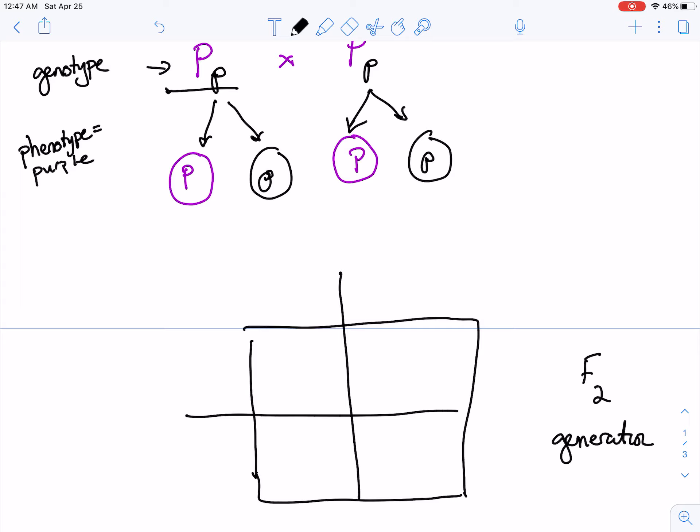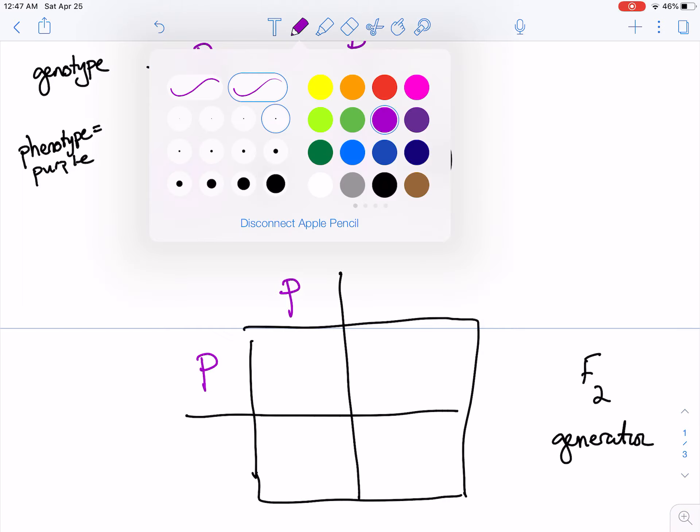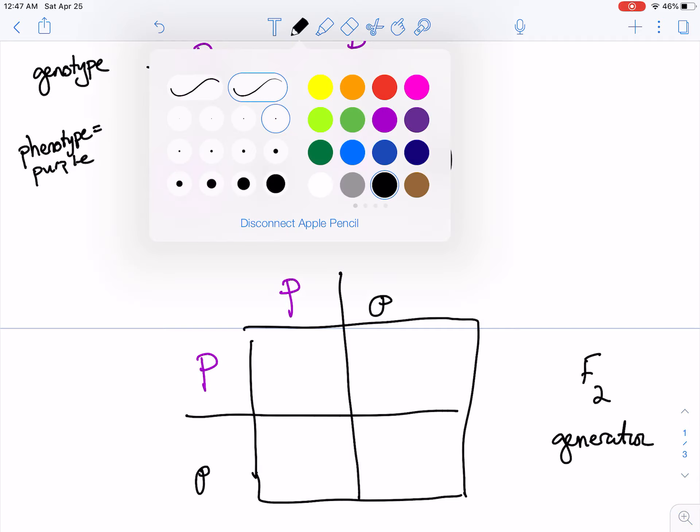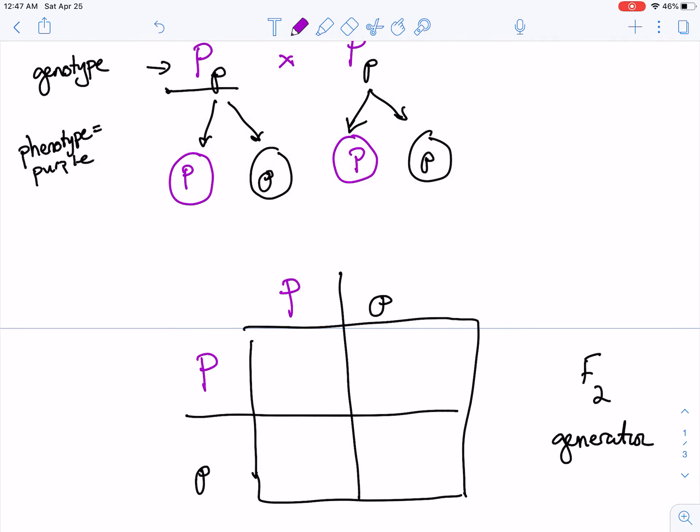So this is going to be the F2 generation. And then we're going to do big P, big P, little p, little p, and then the offspring. Now, this is where it gets interesting. F2 generation is where it gets interesting. So you cross these two, right? We're going to have big P, big P.